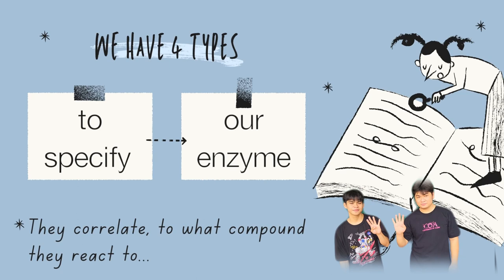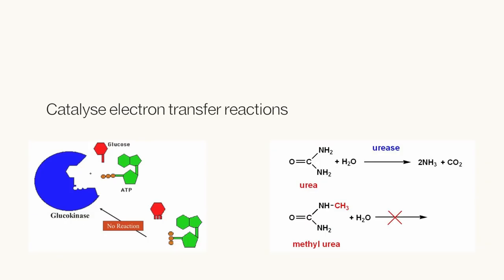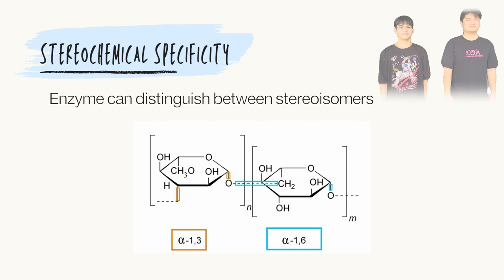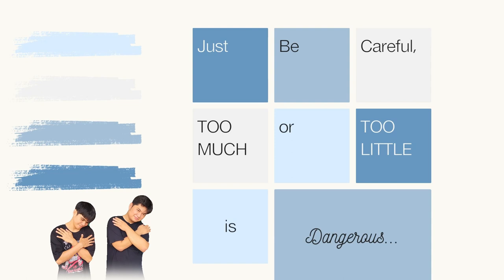We have word types to specify our enzymes. They correlate to what compound they react to: their absolute, group, and linkage, stereochemical specificity. Just be careful — too much or too little is dangerous.